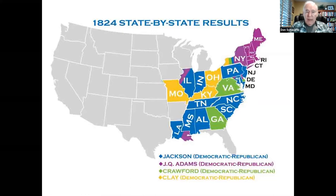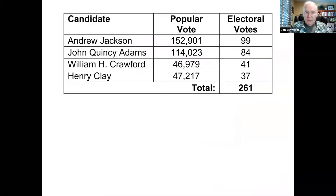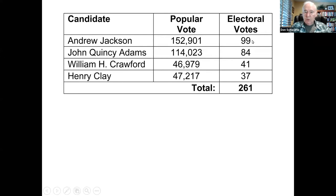As a result of the election, Jackson, who won the most popular votes of the four candidates, ended up with 99 electoral votes. John Quincy Adams had 84. William Crawford had 41. Henry Clay had 37.